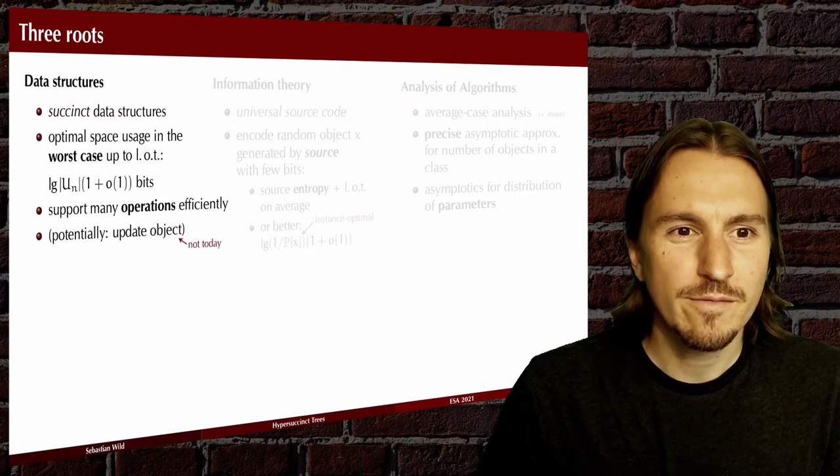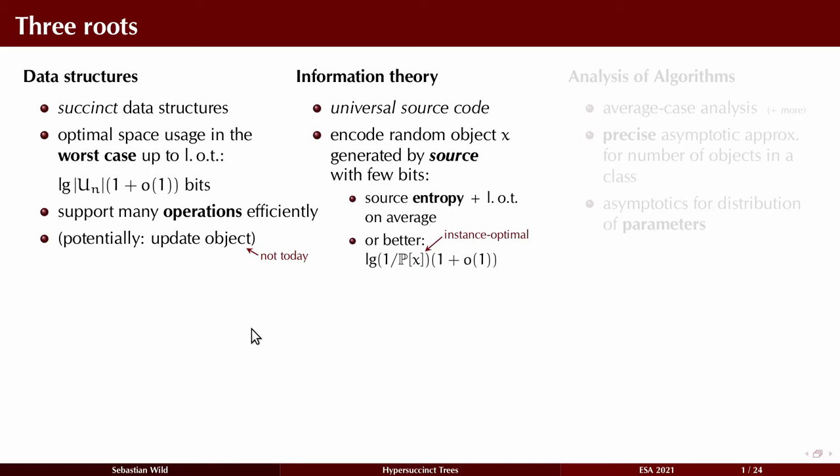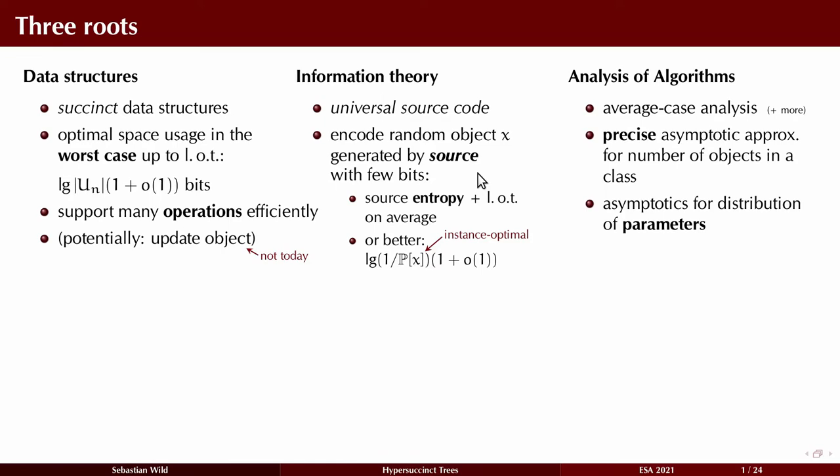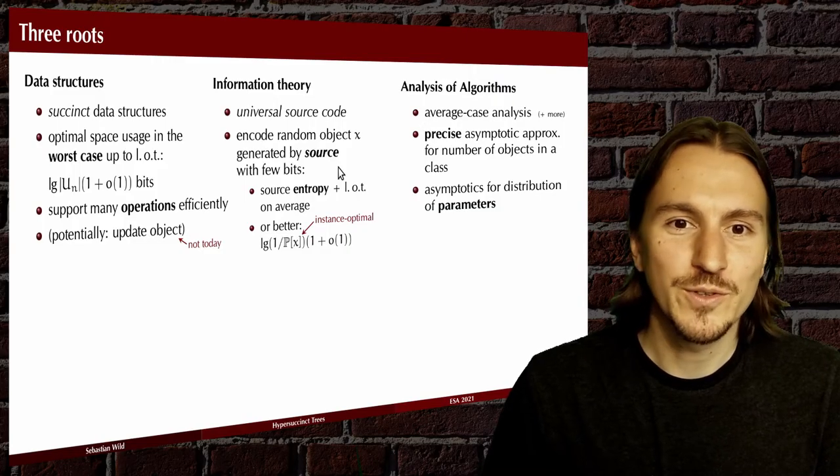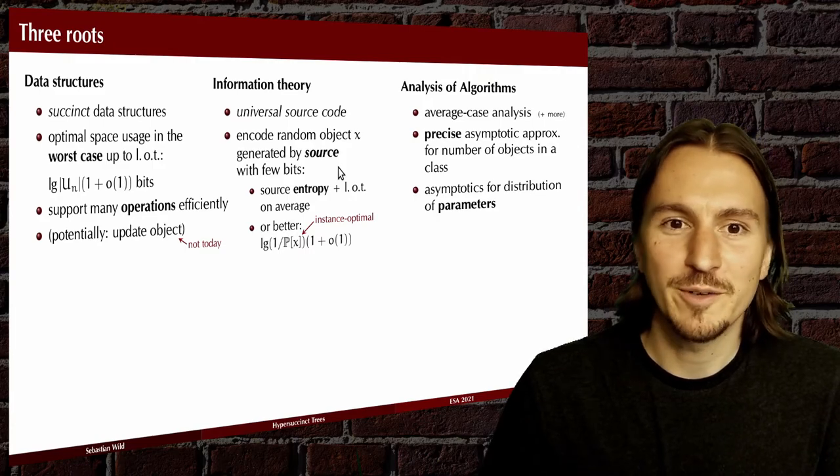This work really has three fields that it brings together. One is data structures, in particular succinct data structures where we try to store an object in the worst case number of bits of space where we allow ourselves a lower order term of extra space to support operations efficiently. The second pillar is information theory where the key object of study is universal source codes, compression methods that are optimal asymptotically for a family of sources that generate random objects. And lastly the analysis of algorithms which contributes techniques and mathematical tools to analyze combinatorial objects and random distributions of parameters on these objects.